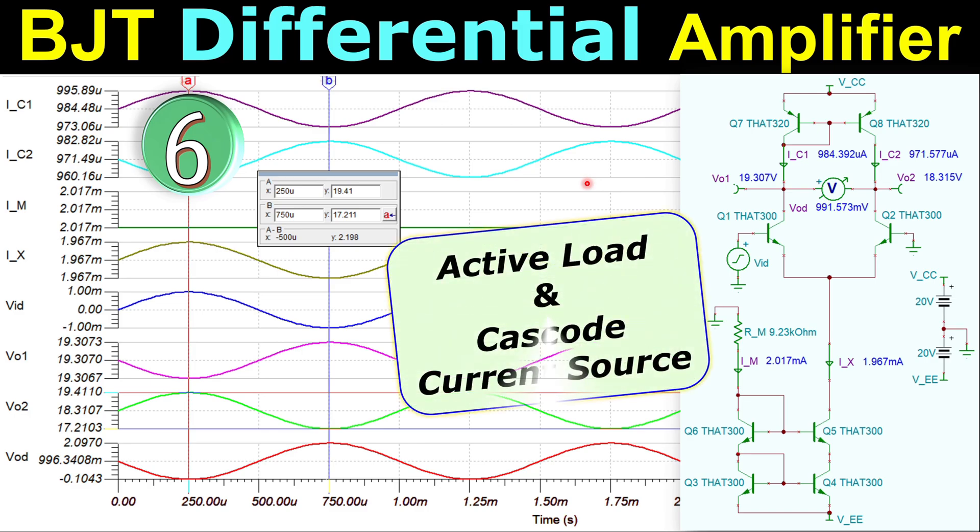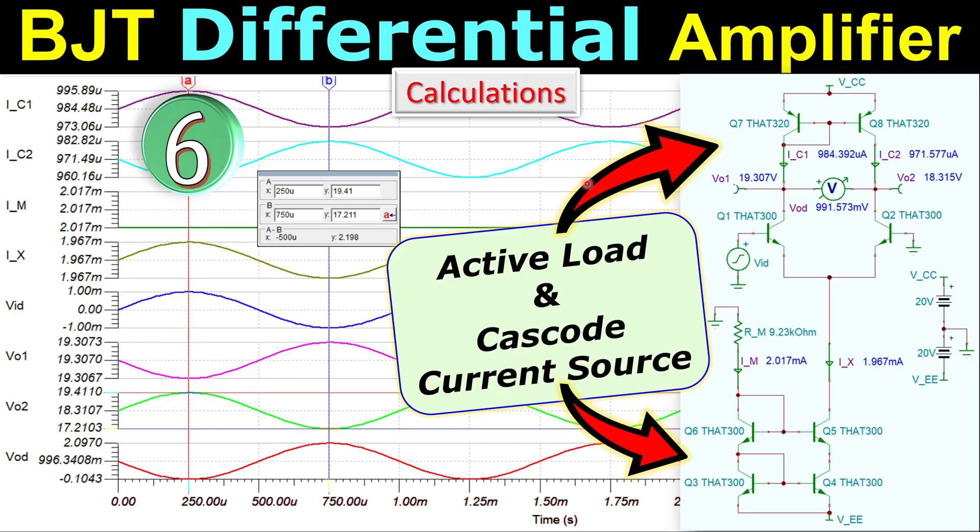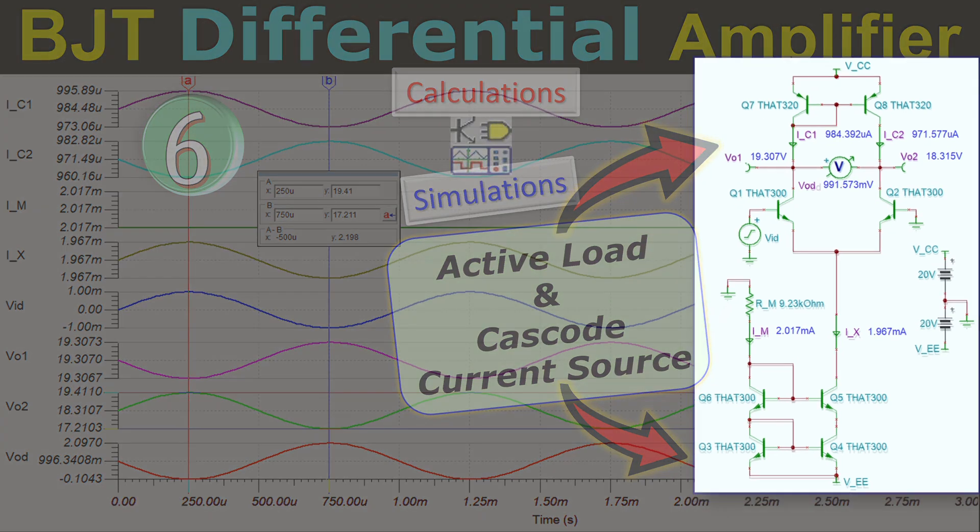So we have an active load which is called this current mirror which is called an active load since this is an active device and it functions as a load and we will still use the cascode current source from example number five which gives us the most or the highest possible output impedance. So let's look at our calculations shortly step by step and also verify these in SPICE simulations.